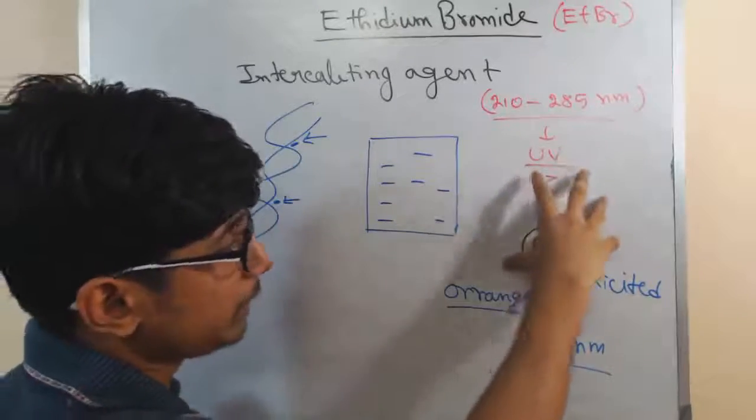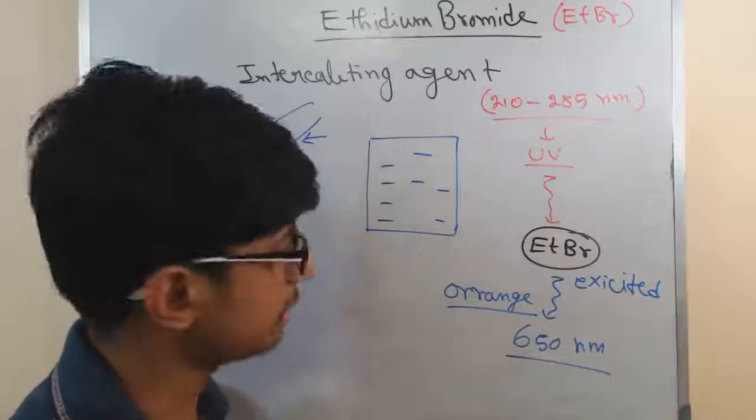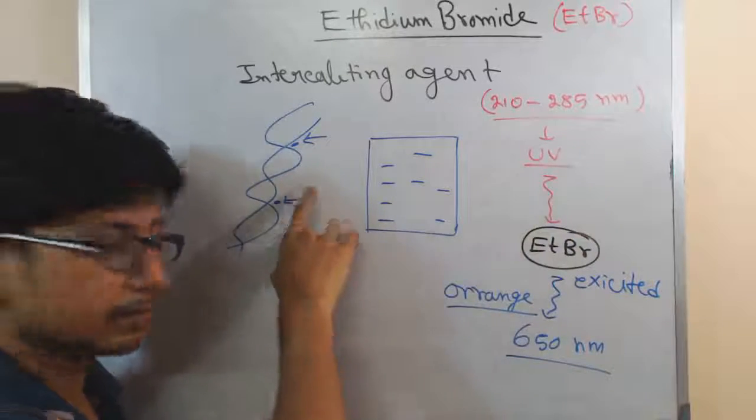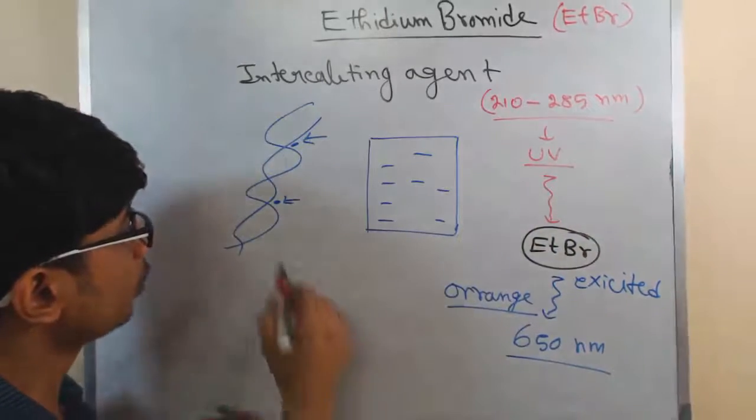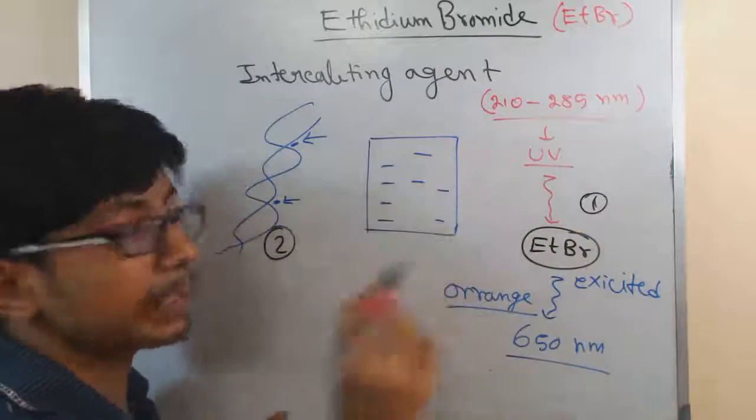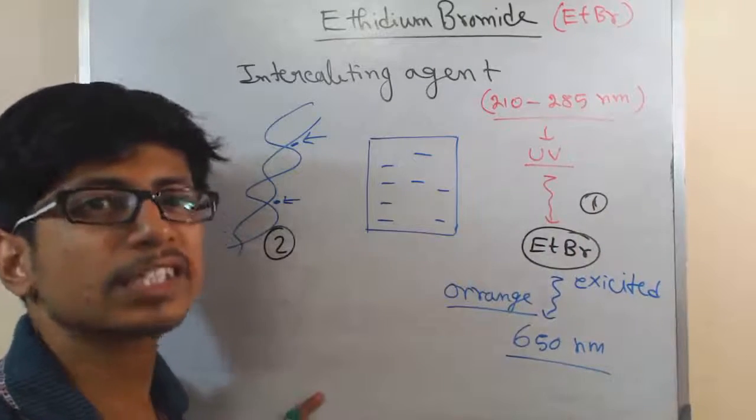This is one property: it is fluorescent, exposed to UV provides orange coloration, orange fluorescence. Second property: it can bind with DNA. This is another very important property. We combine these two properties and we can visualize the DNA, the presence of the DNA in the agarose gel after the gel electrophoresis is done.